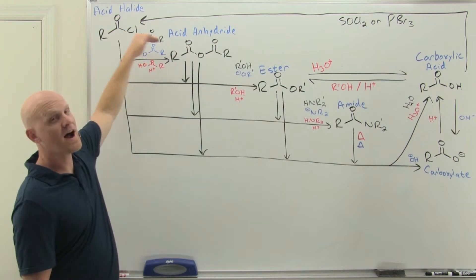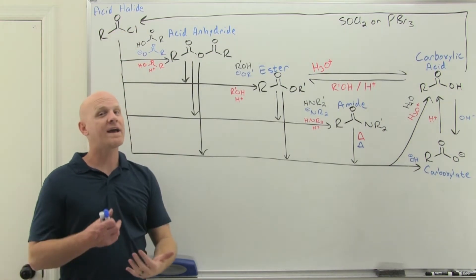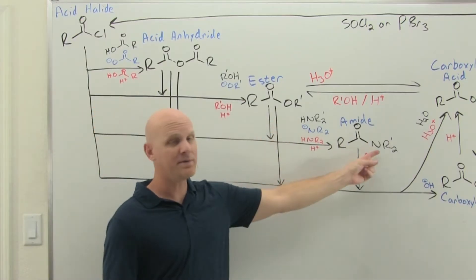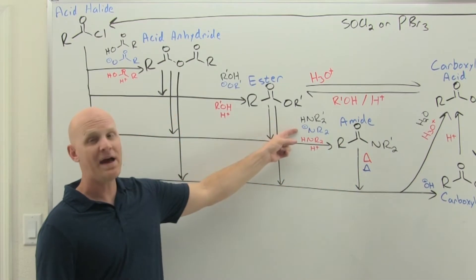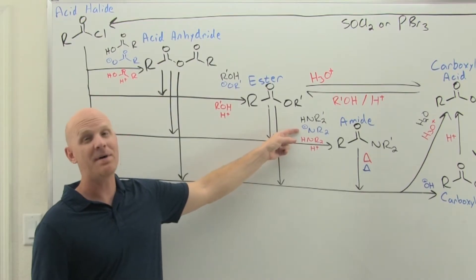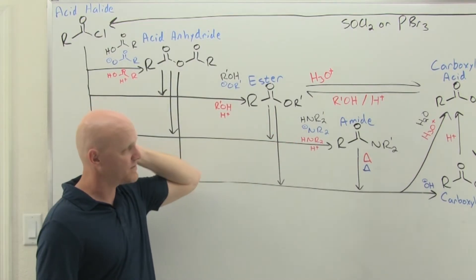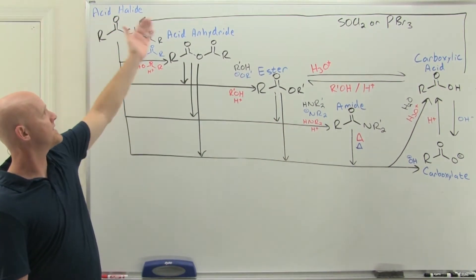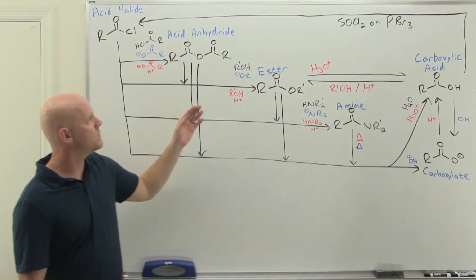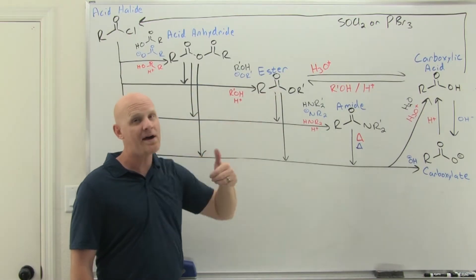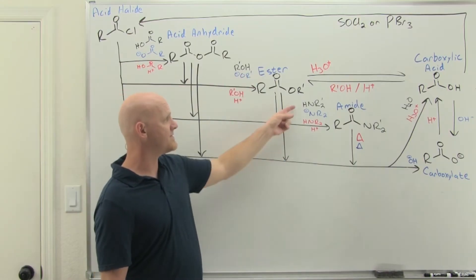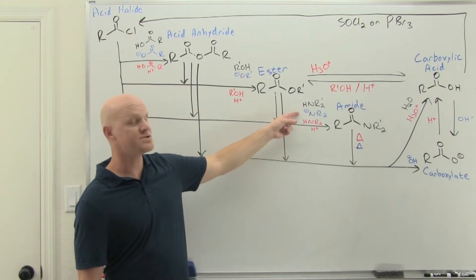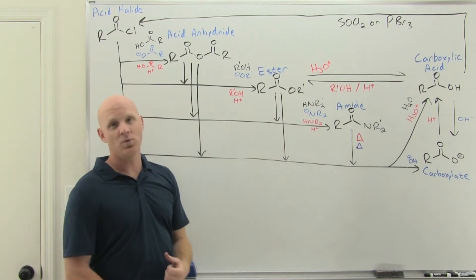For the acyl halide or the anhydride, no catalyst is required, so you can do the uncatalyzed reaction by adding the appropriate amine to replace your leaving group. Alternatively, you can use the base-catalyzed version with the corresponding amide ion — the conjugate base of the amine. Technically acid catalysis is also possible, but for acid halides or acid anhydrides it's not typically done. If you start with an ester, you must use acid or base catalysis — you can't just use the amine by itself.